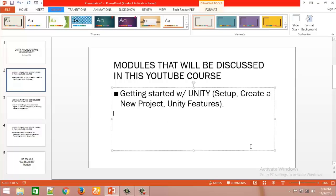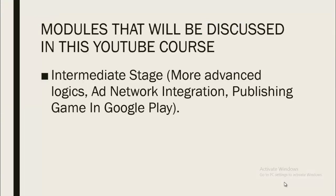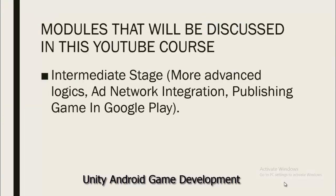The second step of the Unity Android game development course is the Intermediate Stage. In the previous stage we were beginners learning to develop a simple game like Flappy Bird. Now that we are more advanced in game development, we will learn more advanced logic.